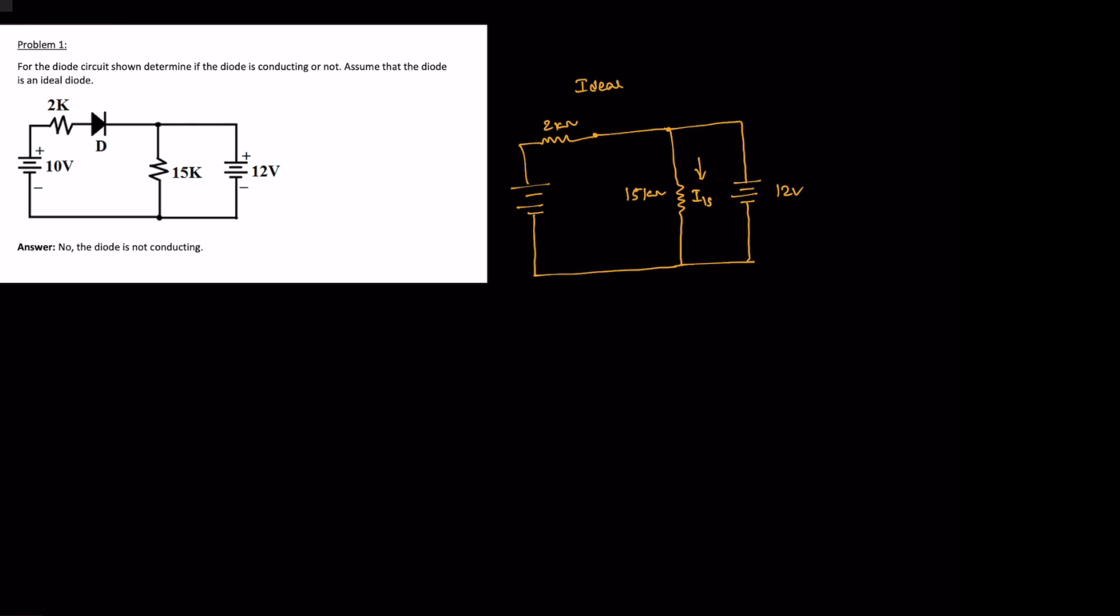So we can easily tell the current through 15 kilo ohm resistor is, let's say I15, that is 12 over 15, so that is nothing but three fours, three five, four by four or five, that is point five, five point eight milliamps.